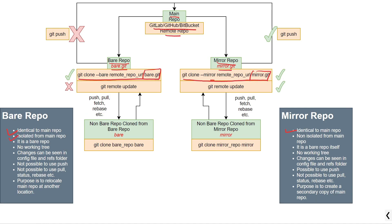The second difference is that a bare repository will be isolated from the main repository, whereas a mirror repository will be non-isolated from the main repository. This means that if there are some changes in the main repository and you want to fetch all those changes to the bare repository, it won't be possible using the git remote update command. Whereas, fetching changes from the main repository to the mirror repository will be possible using the git remote update command.